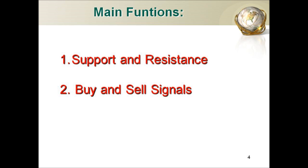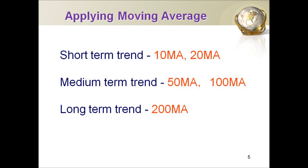There are two main functions of the moving average. The first function is to use the lines for support and resistance, and the second function is to generate the buy and sell signals. In general, we can use the 10-day and the 20-day moving average for short-term analysis, the 50-day and 100-day for the medium term, and the 200-day moving average for the long-term analysis.